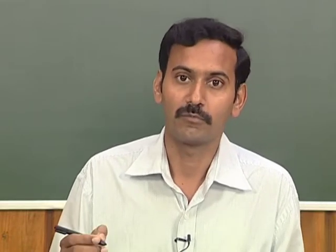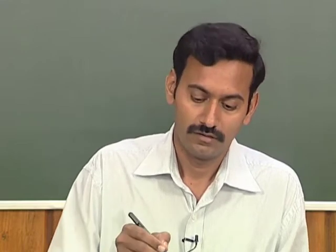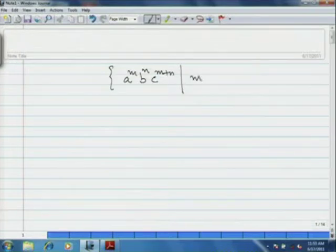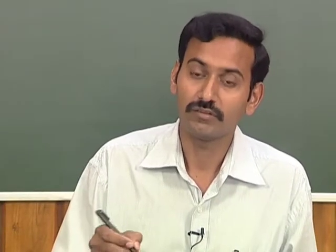So far we have discussed what is a Context-Free Grammar and the languages generated by Context-Free Grammars, that is Context-Free Languages, and certain examples to get familiarity with Context-Free Grammar. Let me give you one more example: consider the set of strings of the form a^m b^n c^(m+n). You can give a Context-Free Grammar to generate this language by taking the clue from the previous examples.